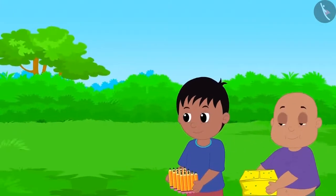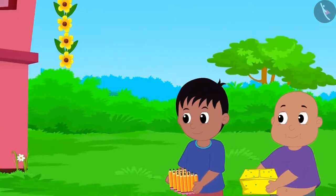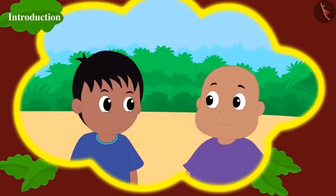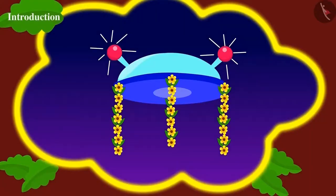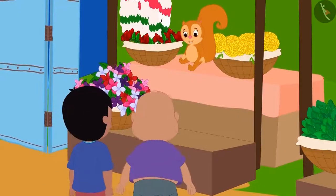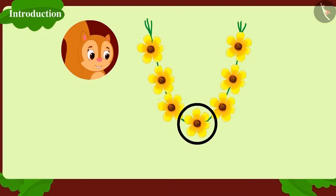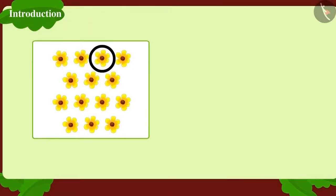When Raju and Bablu reached home with all the things, they saw that their house was decorated with beautiful festoons. They thought, why not buy some festoons to decorate Jeev's flying saucer as well? They quickly ran to Chanda's flower shop. Chanda makes each festoon with a bunch of seven flowers. If Raju and Bablu want to decorate Jeev's flying saucer with fourteen flowers, how many festoons will they have to buy?